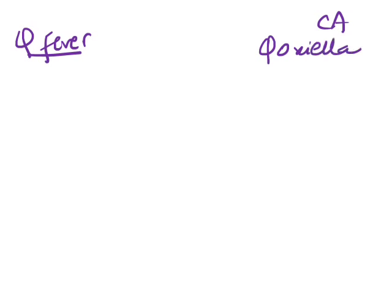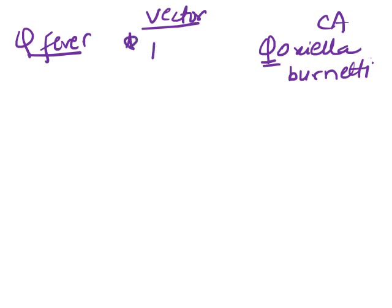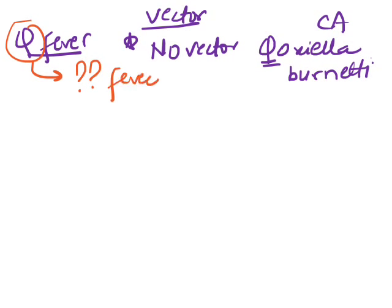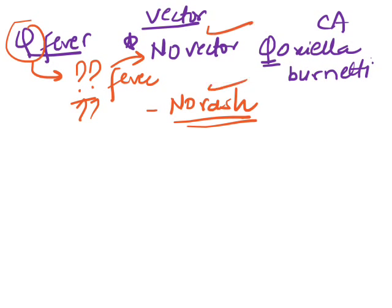Next we have Q fever. The causative agent is Coxiella burnetii — spelled with a C rather than a Q. Q fever has now been excluded from the Rickettsia group. A very important point: there is no vector for Q fever. How to remember this? Q stands for 'question mark' — so the vector is a question mark. Similarly, there is no rash in Q fever.